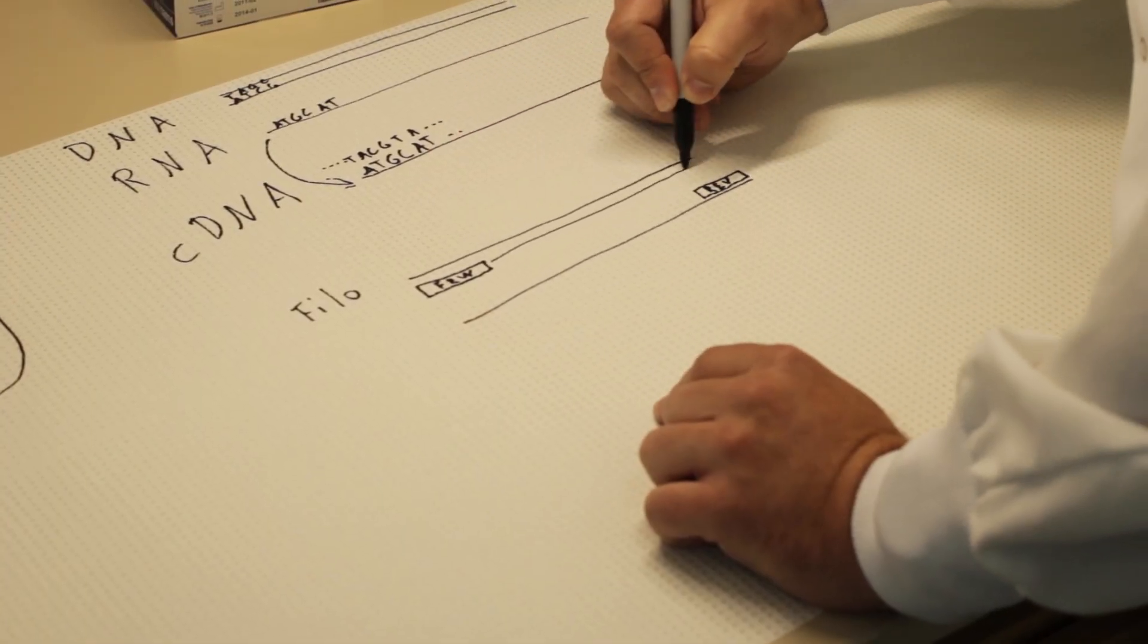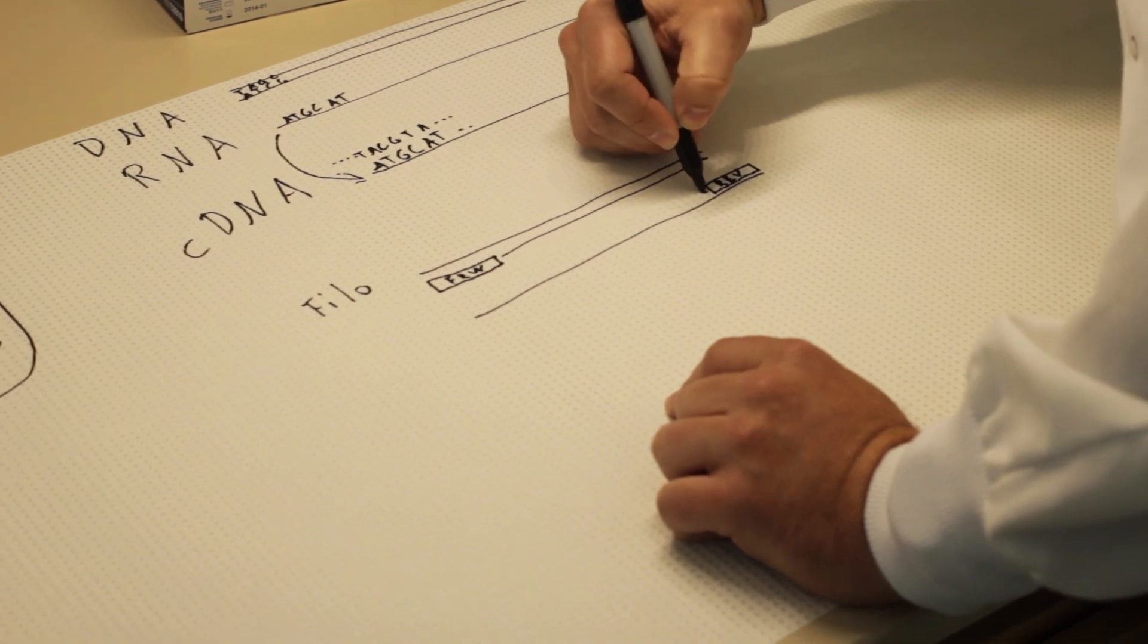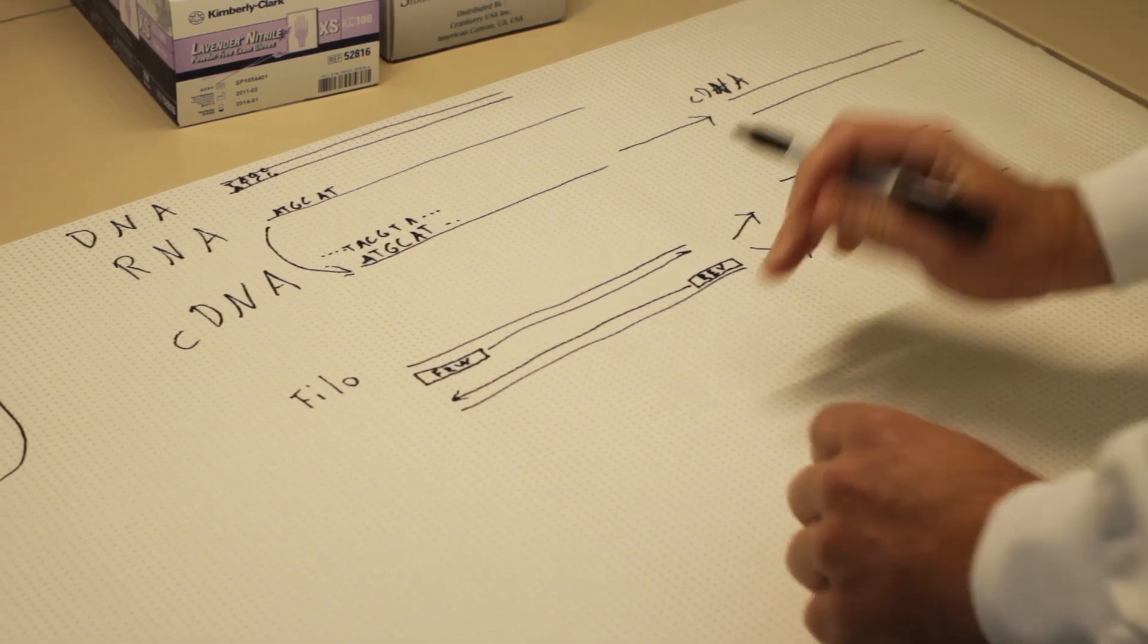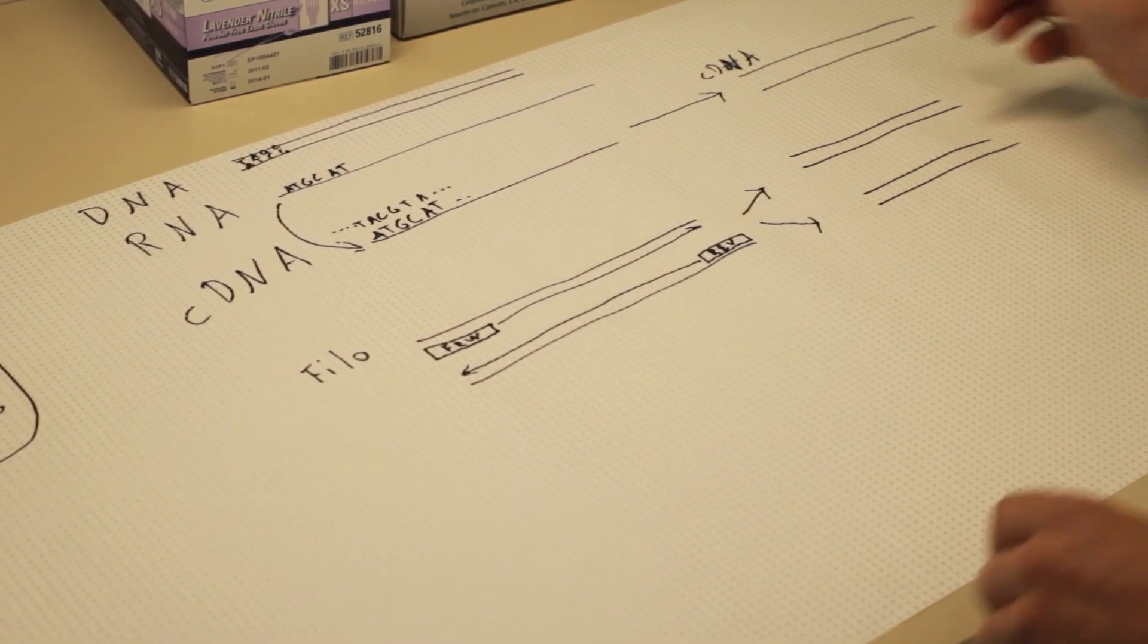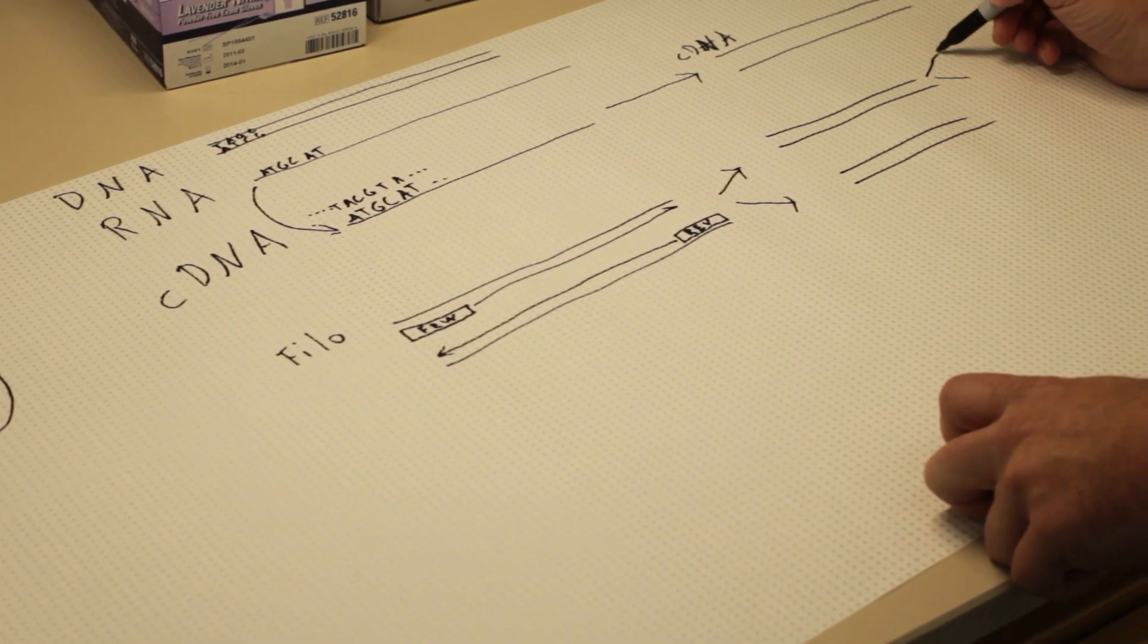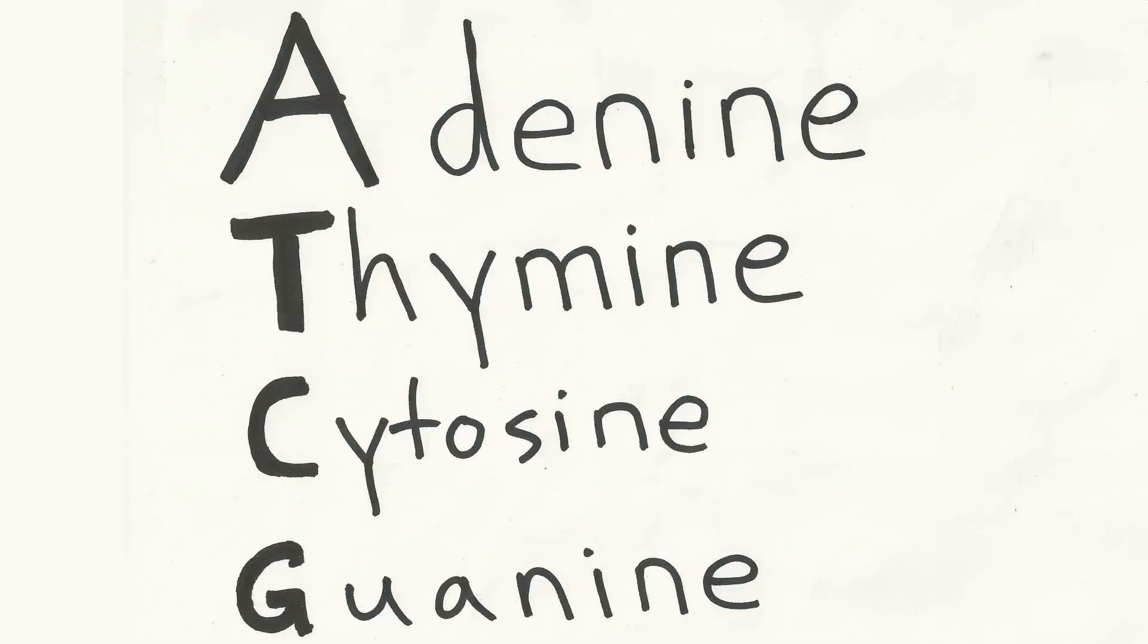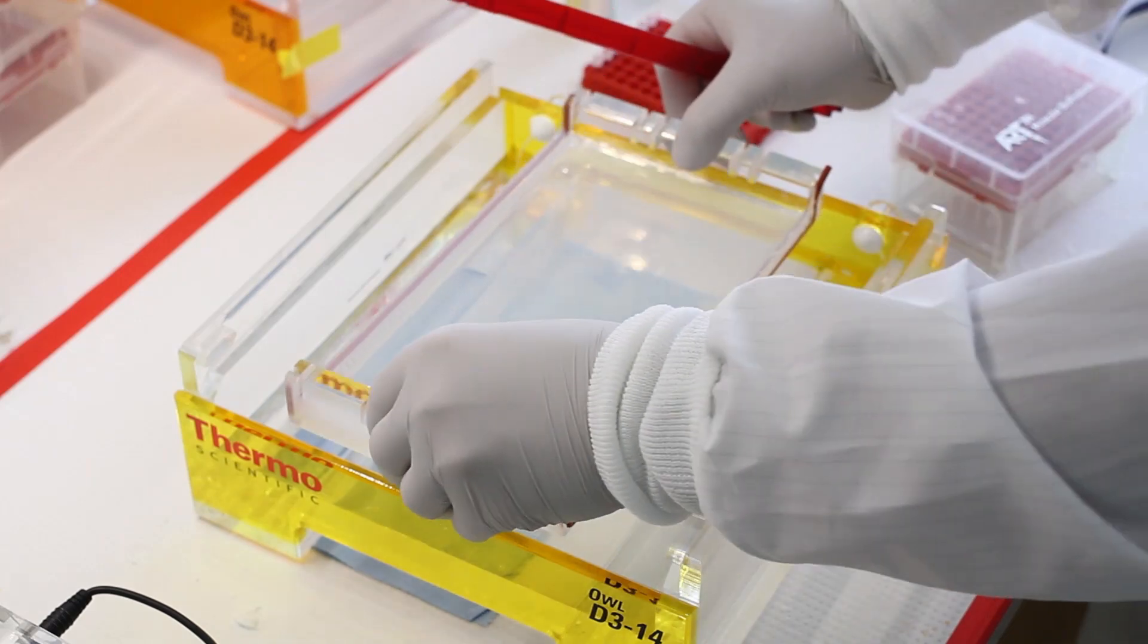When the PCR gets going, the forward primer will extend one way and the reverse primer will extend the other way, creating two more strands. Through a process of heating and cooling and heating and cooling, the primers will bind, and then the TAC enzyme will start filling in the A, T, Cs, and Gs. That's how amplification leads to exponential growth.